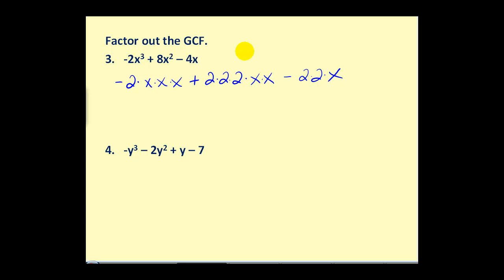So, we see each has a factor of 2 and also a factor of x. So, even though the greatest common factor is 2x, since the leading coefficient is negative, we will factor out negative 2x.